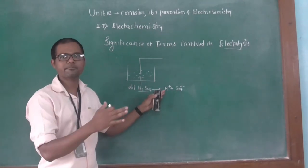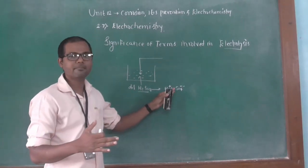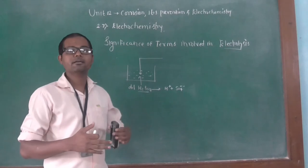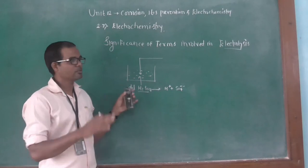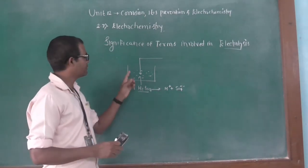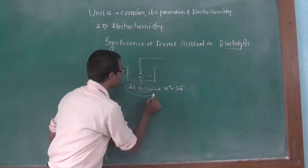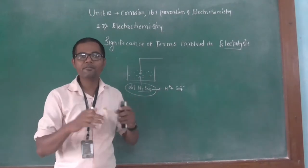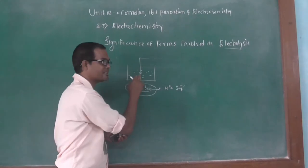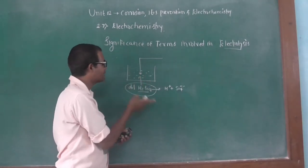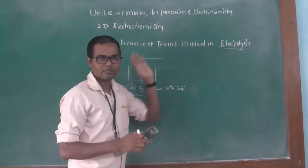Simply, the process in which the chemical decomposition of the electrolyte — for example, sulfuric acid — takes place when electrical current is passed into the electrolyte, at that time the chemical decomposition of the electrolyte starts. That process is said to be electrolysis.